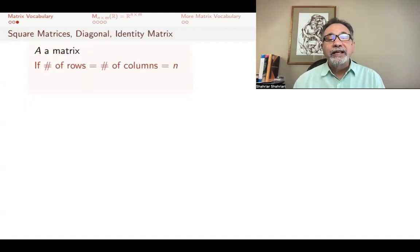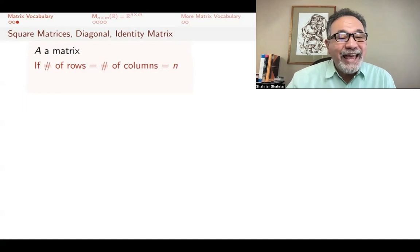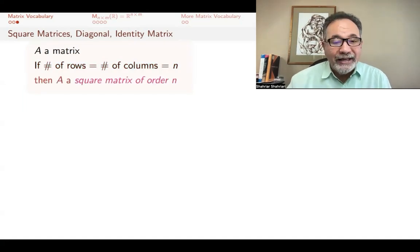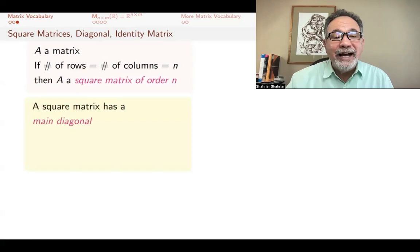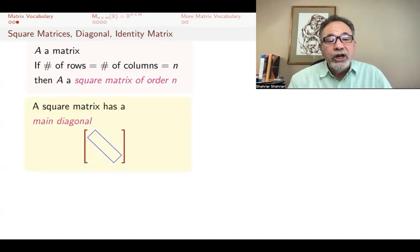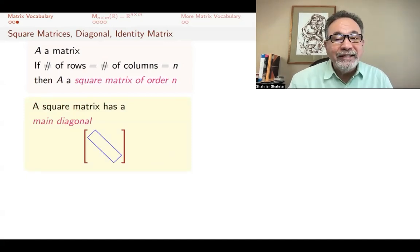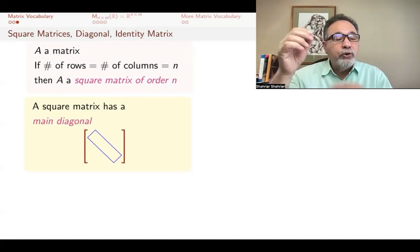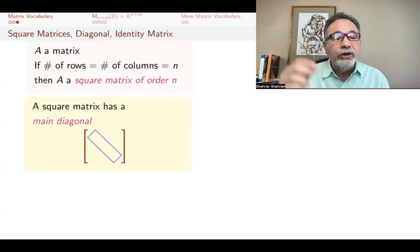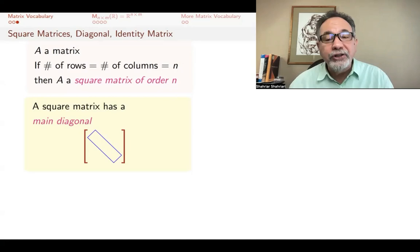If the number of rows is the same as the number of columns, and it's n, we say that it's a square matrix of order n. A square matrix has a main diagonal. It has, of course, two diagonals. We always are talking about the main diagonal going from the upper left corner to the bottom right corner. We hardly ever talk about the other diagonal.